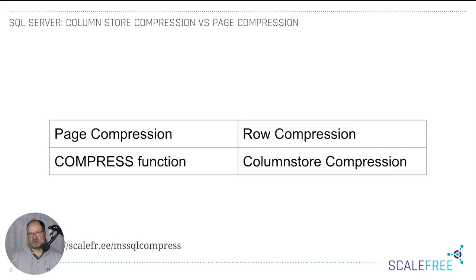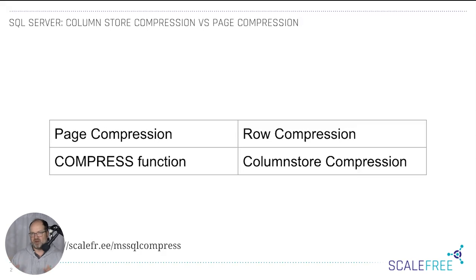When do you use column store compression? It's great for aggregating data — for example, measure values in a fact entity that you want to aggregate by some dimension. That's where column store compression comes into play. I would use it on those entities in the data model where you produce fact entities and do all these aggregations.